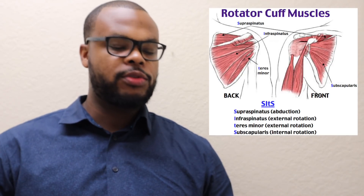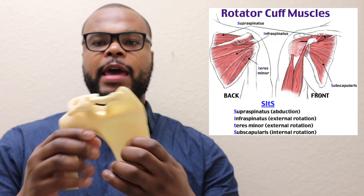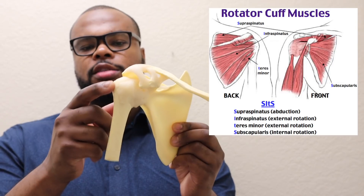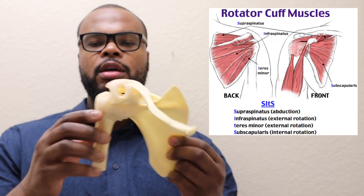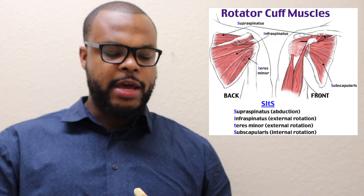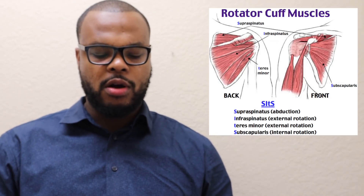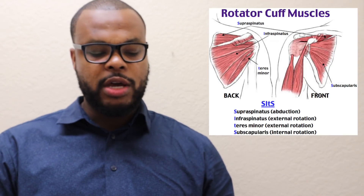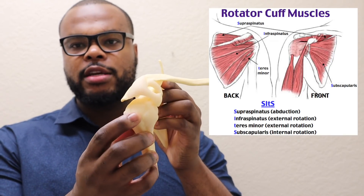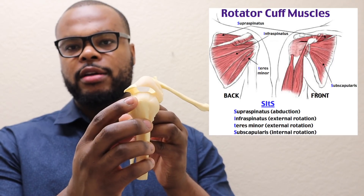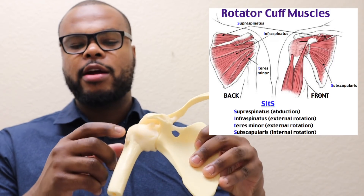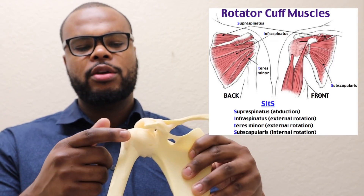The rotator cuff is a group of muscles that attach from the scapula — that's the shoulder blade here — and they attach to the proximal portion of the humerus here. It's a group of four muscles that control the movement of the arm. We refer to it as the SITS muscles. You have your supraspinatus, which is right here; your infraspinatus, which is right here; your teres minor, which is back here; and then your subscapularis, which is in the front of your shoulder here.